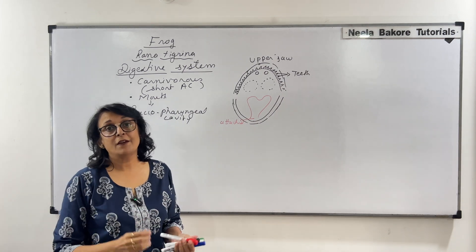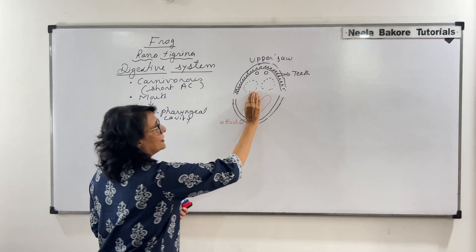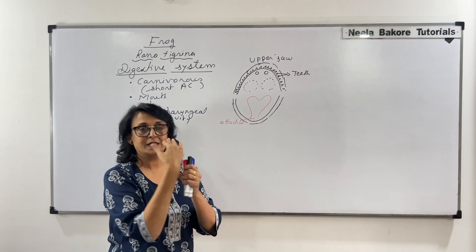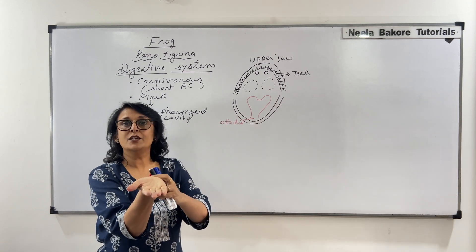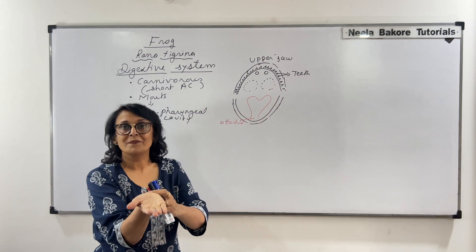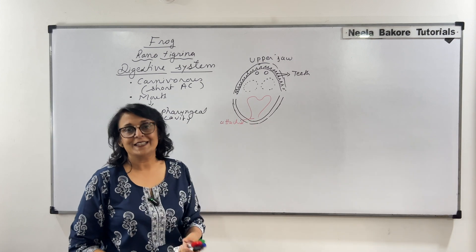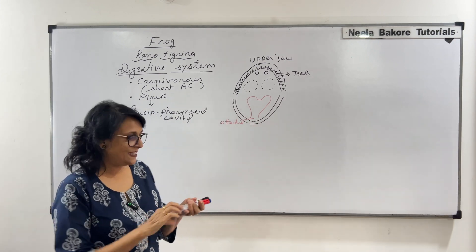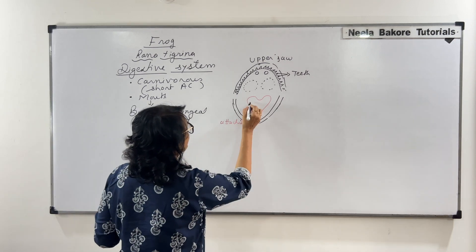Whenever they have to feed on insects, this tongue is darted out. It is attached at the front and then thrown out. So we say it is anteriorly attached. It is long and sticky.